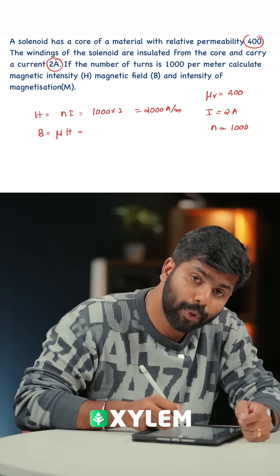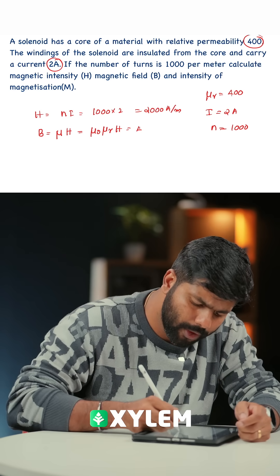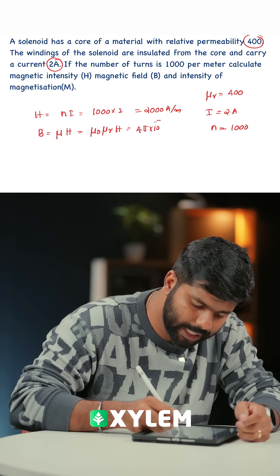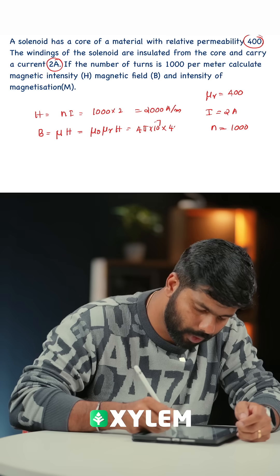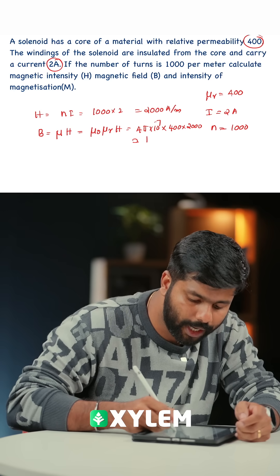So μ is equal to μ0 into μr into H. μ0 value 4π into 10 raise to minus 7 into μr value 400 into H 2000. That is approximately 1 tesla.